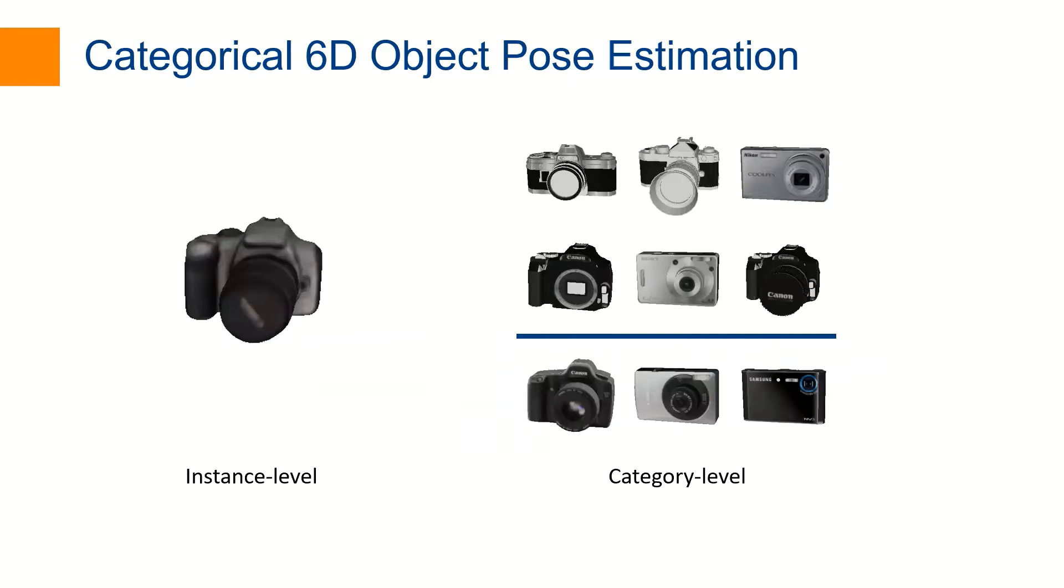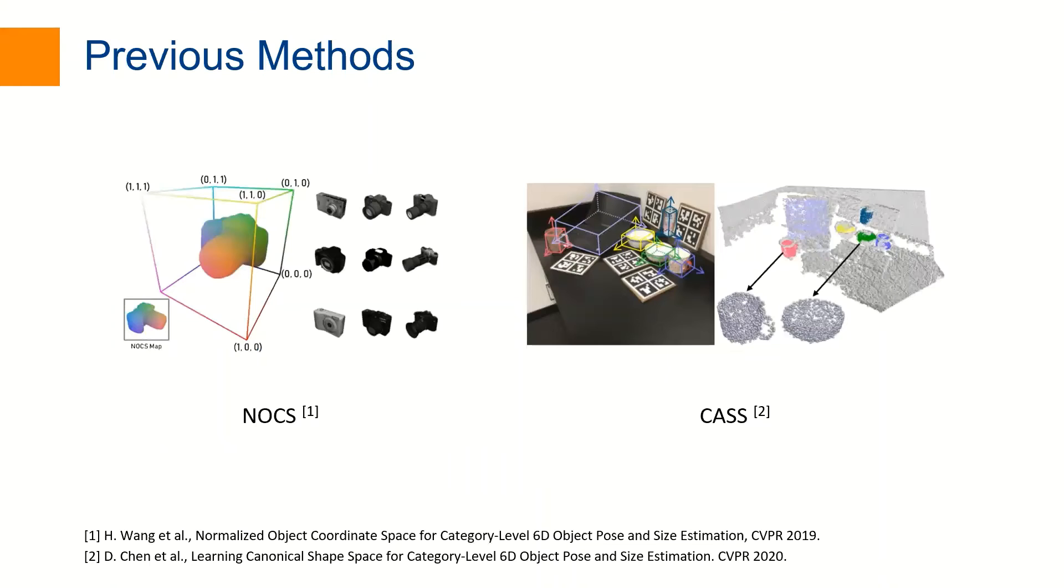Due to the intraclass shape variation, Categorical 6D Pose Estimation is a very challenging task. Existing methods either directly regress a correspondence or reconstruct a model, but not jointly for pose estimation.